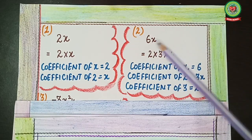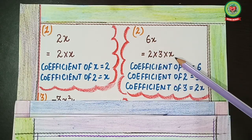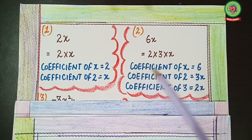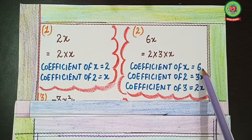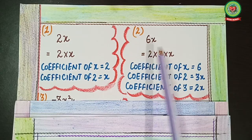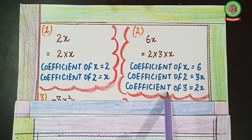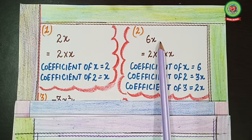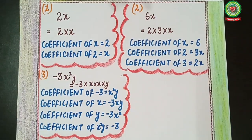Second example: 6x. We factorize 6 as 2 × 3, so 6x = 2 × 3 × x. Coefficient of x: hide x, what is left is 2 × 3 = 6. Coefficient of 2: hide 2, what is left is 3x. Coefficient of 3: hide 3, what is left is 2x. In the same way you can do many more sums like this.